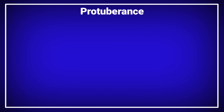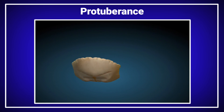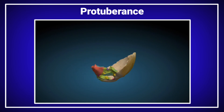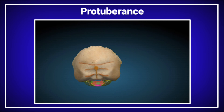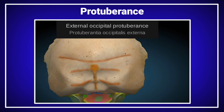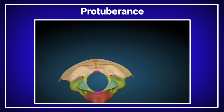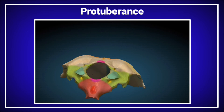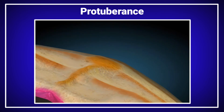The protuberance — there are many protuberances present on different body parts. We will discuss the protuberance present on the occipital bone of the skull. The occipital bone is located on the posterior side of the human skull. There is a protuberance present on its posterior side called the external occipital protuberance, which highlights a rounded elevation on the occipital bone of the skull.